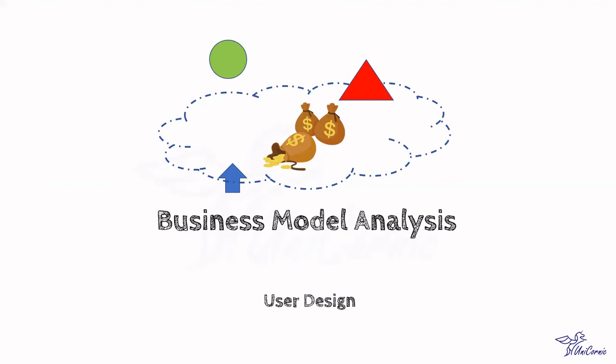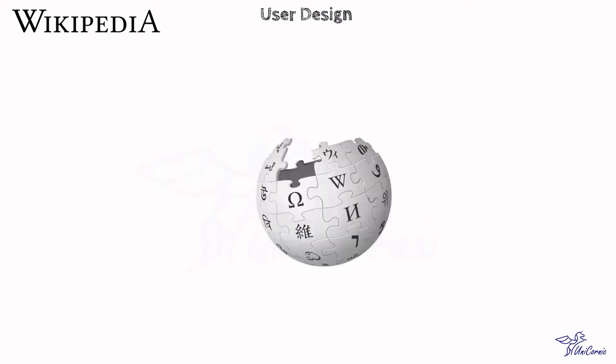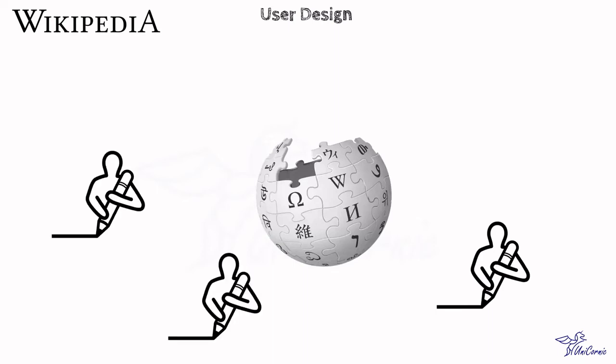Let's discuss some examples of application of the user design business model. Wikipedia, a free encyclopedia, is based on a user design business model. Its users create all the content of Wikipedia. The policy of allowing anyone to edit has made Wikipedia the biggest and possibly the best encyclopedia in the world.